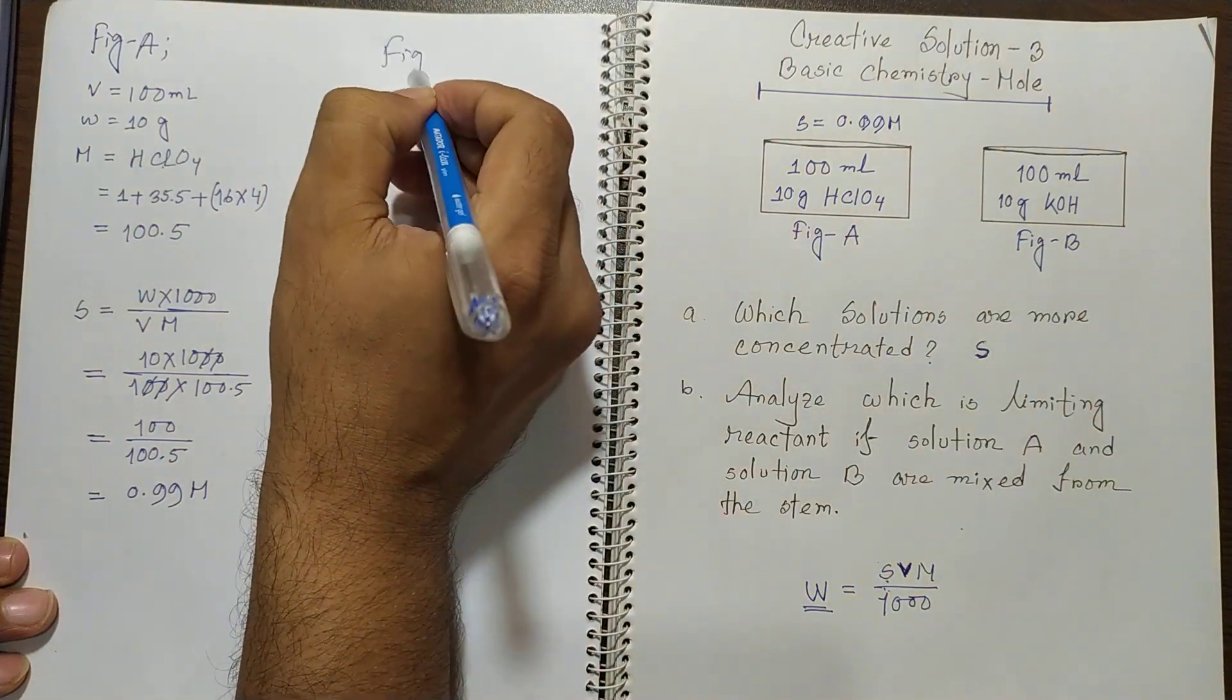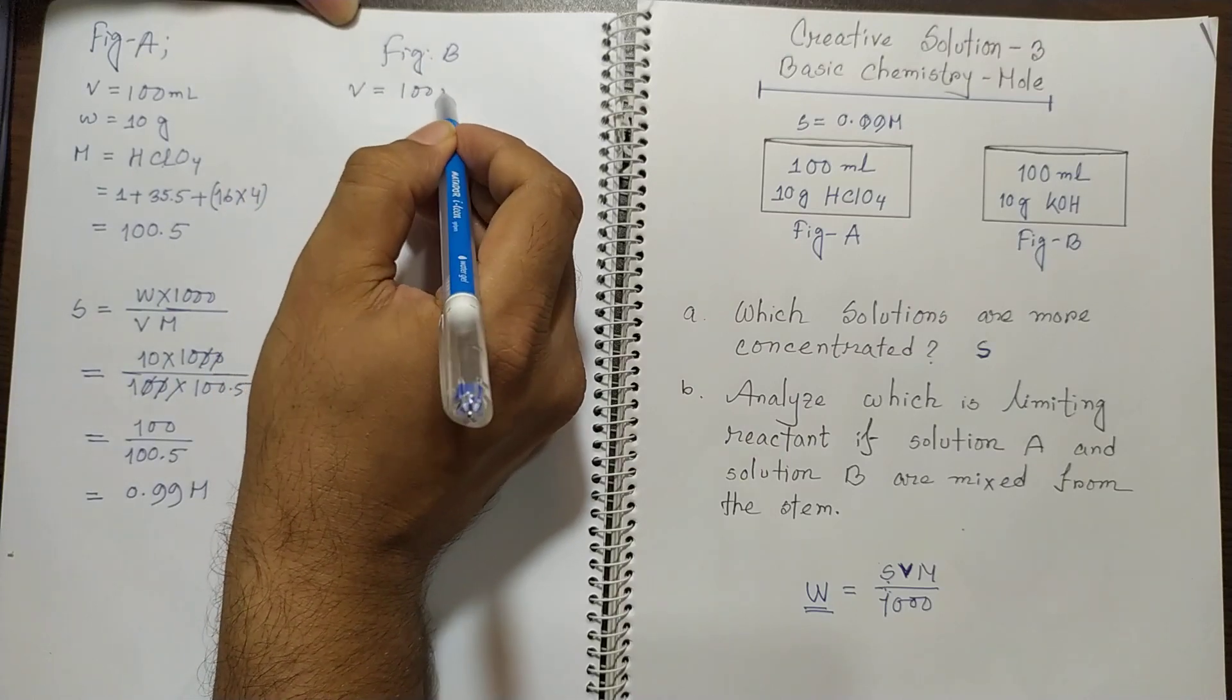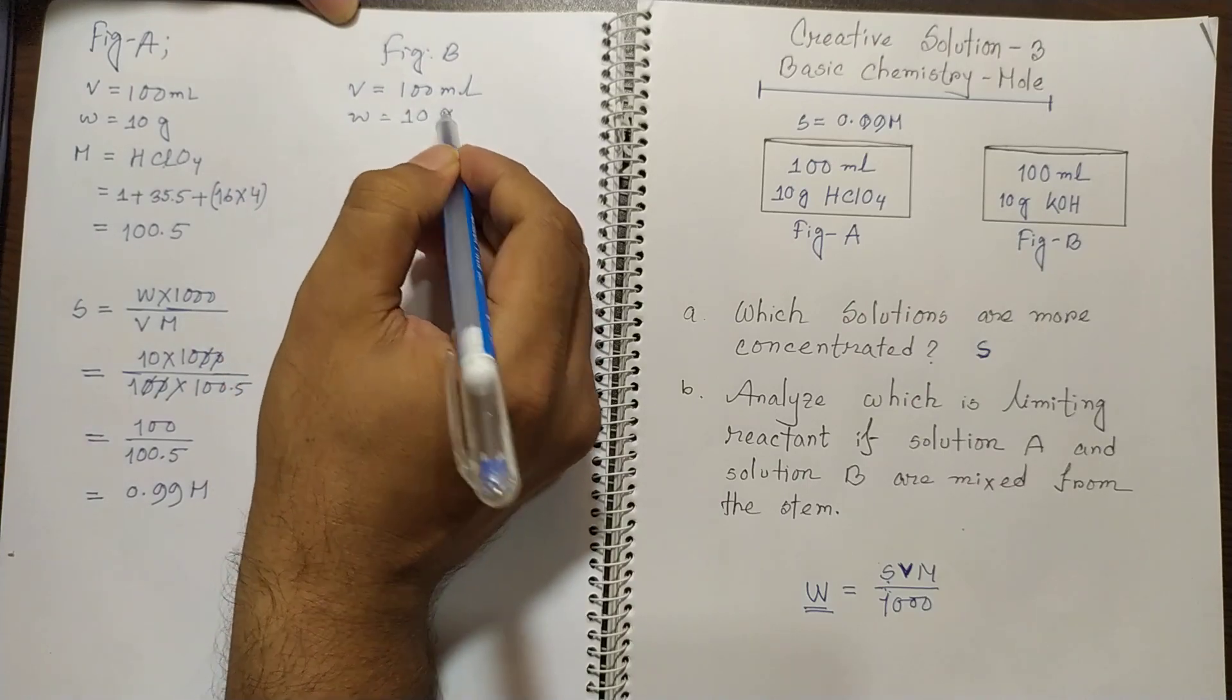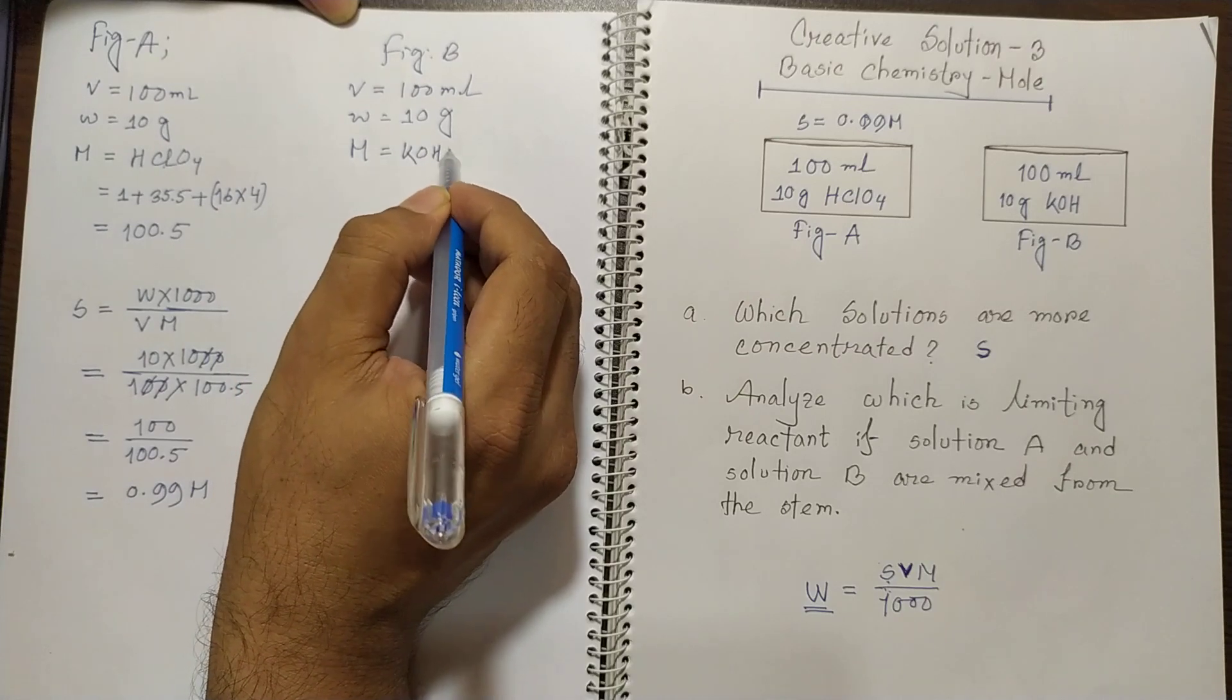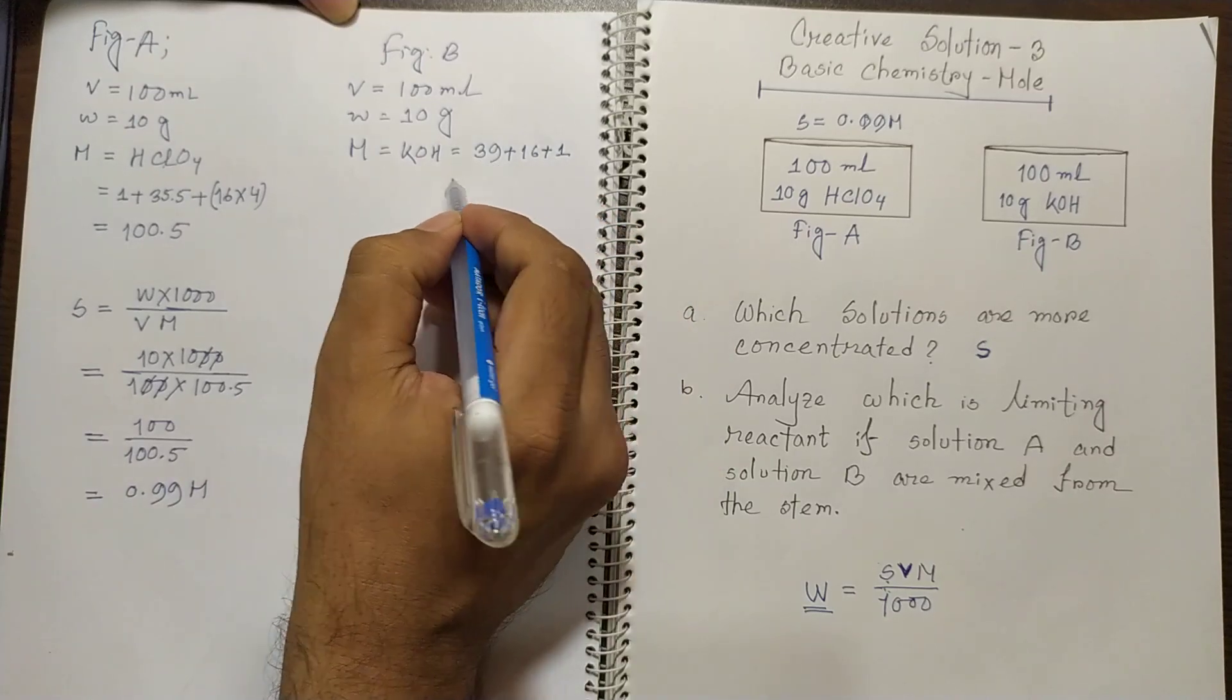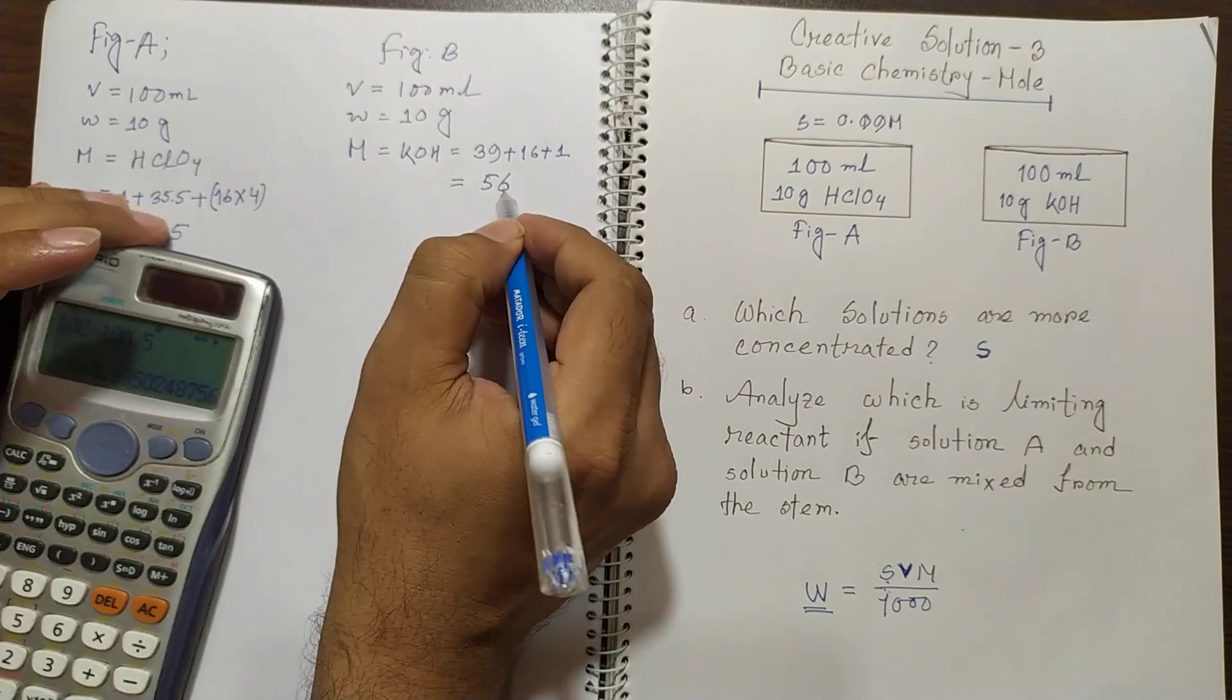In figure B what other data is given. The volume is same 100 ml and the mass of the solute is same 10 gram. But the molecular mass of potassium hydroxide would be different. So potassium is 39, oxygen is 16 and hydrogen 1. So it would be 56.